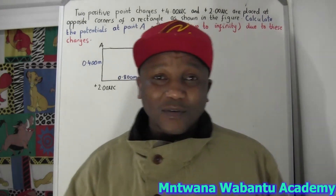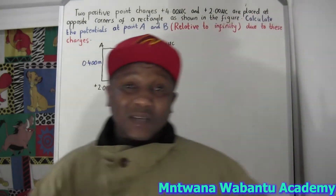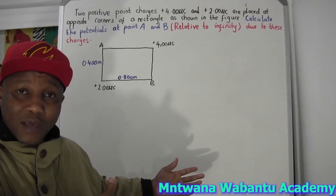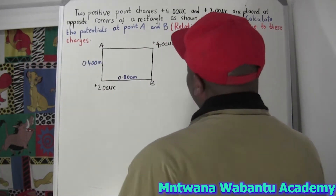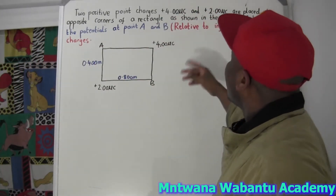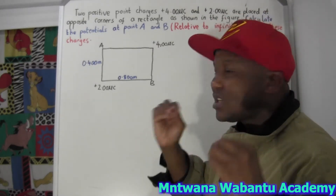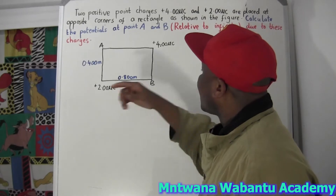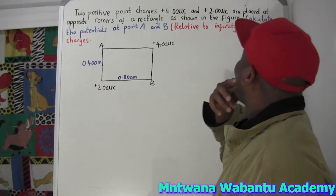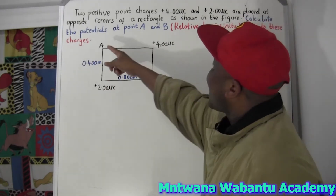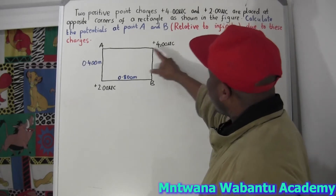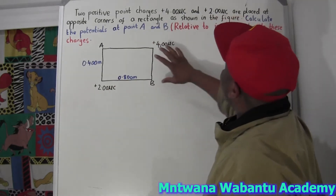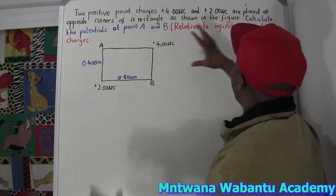I'm Hamish. Subscribe to my channel. Okay, so the question says: two positive plane charges — this is one positive charge and this is another positive charge — placed at opposite corners of a rectangle, as shown in this figure.